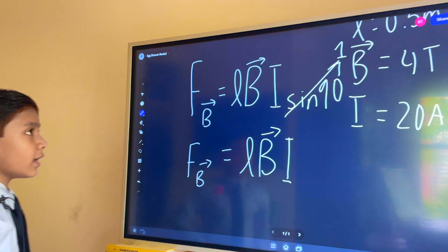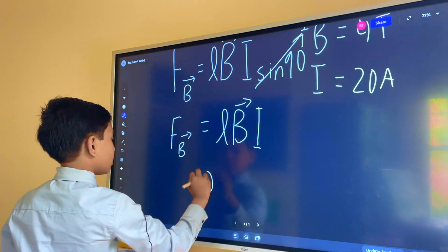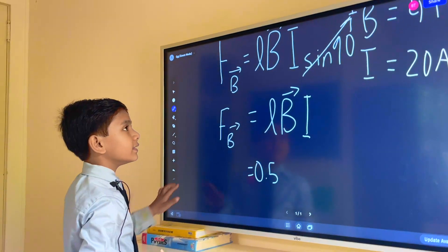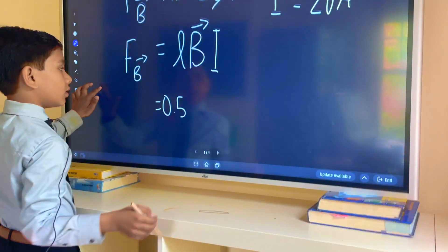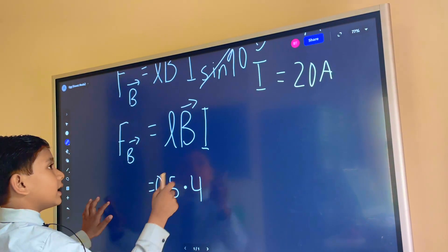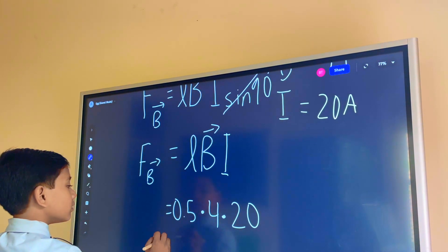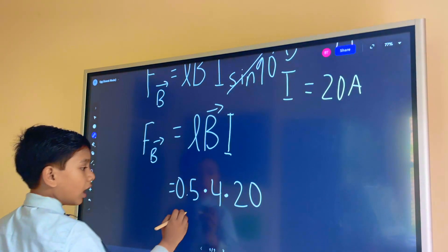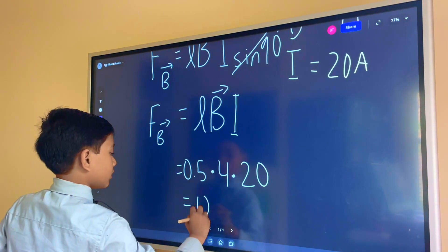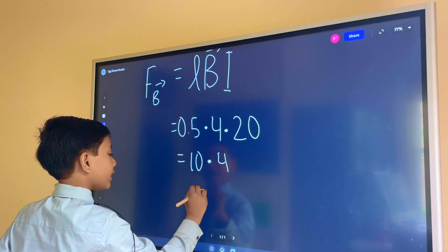All right so now let's plug in what we know. So this is 0.5 and then we have 4, and then we finally have 20. And that will give us a total of, we have 10 times 4, it's equal to 40 newtons.